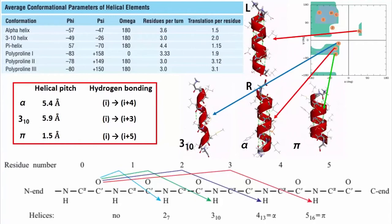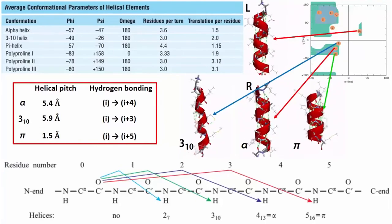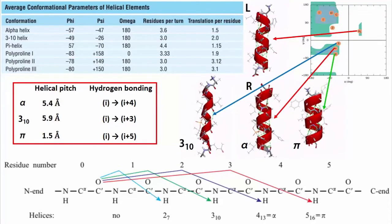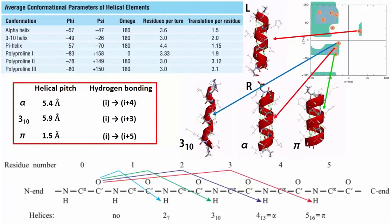Every main chain carboxyl and amino group is hydrogen bonded to a peptide bond 4 residues away. This gives a very regular stable arrangement.